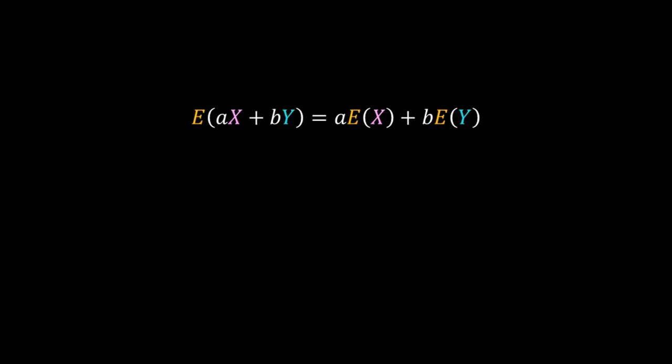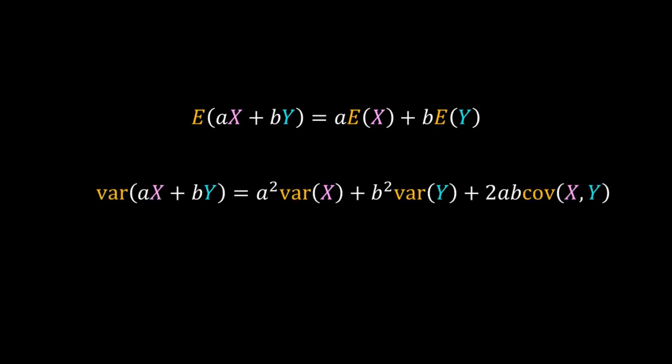The variance of aX + bY is a² times Var(X) plus b² times Var(Y) plus 2ab times Cov(X, Y).